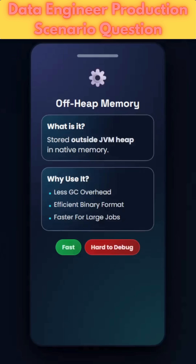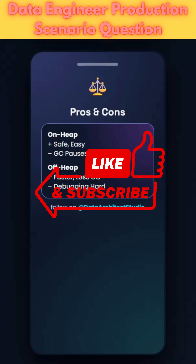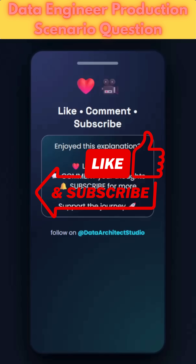Outside the JVM memory, we have off-heap memory, which is managed by RAM and does not have any garbage collector, so we can reclaim it manually. It is especially efficient for storing data in binary format and is used for large jobs. Off-heap memory is much faster than disk because it stores data in RAM only. Debugging is a bit harder with it, and it has no GC. Hope you learned something new in this video — if you did, please like, share, and subscribe. Thank you.